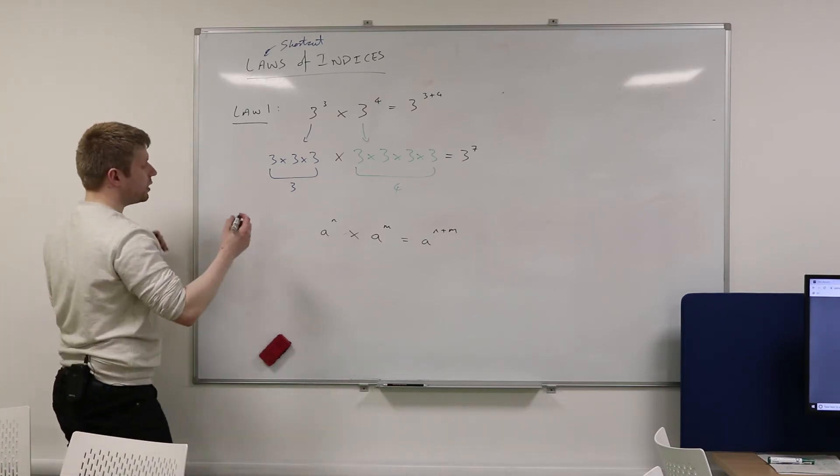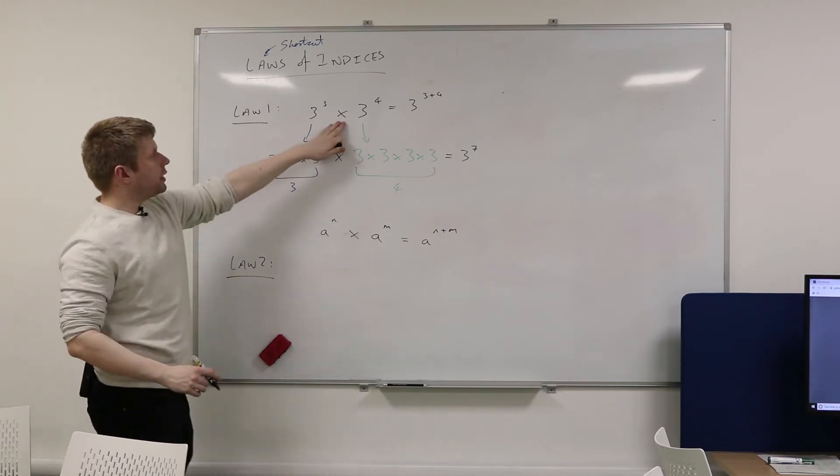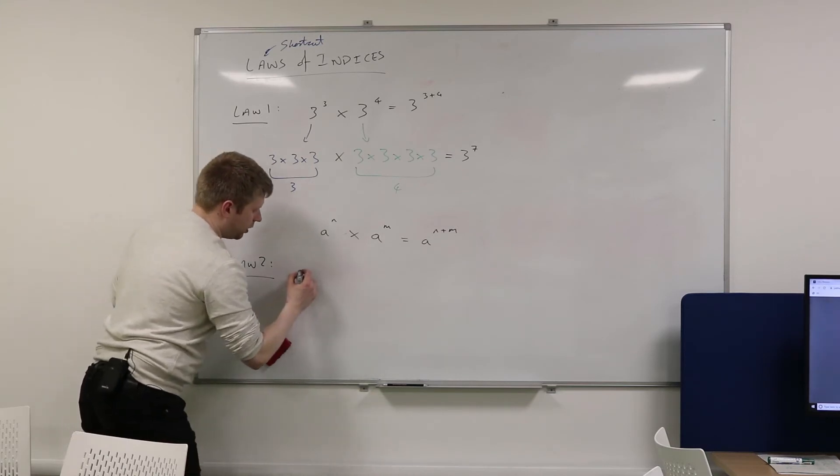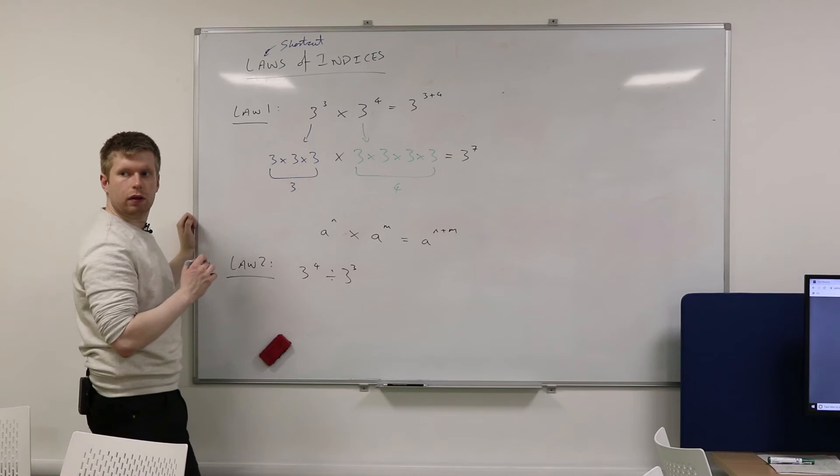All right. Let's have a look at the second law, then. Very, very similar. So this works if we multiply them. What happens if we divide them? So let's try 3 to the power of 4, divided by 3 to the power of 3.